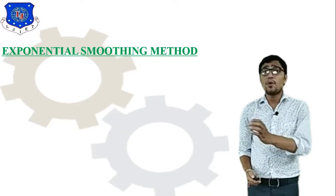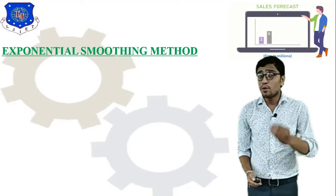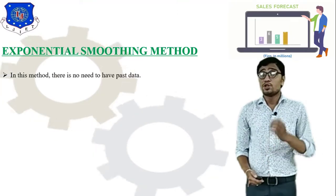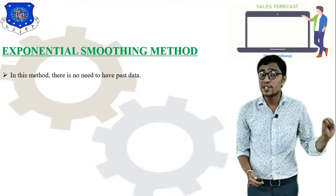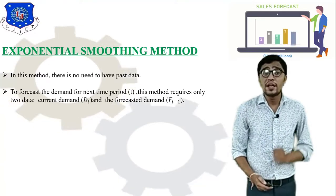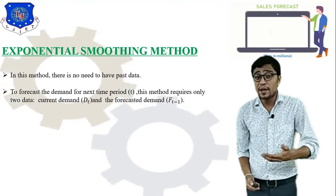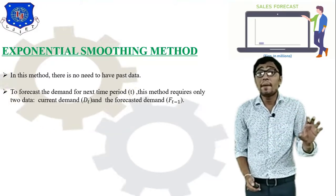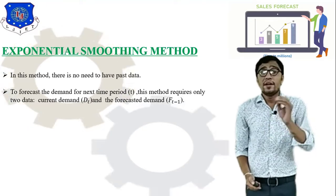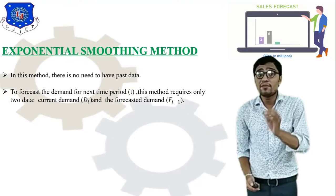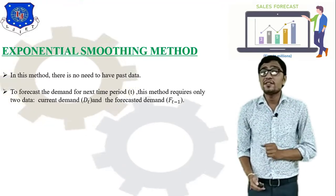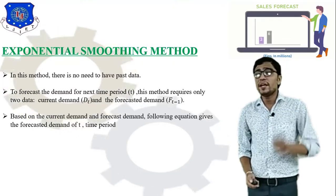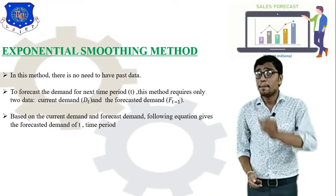So first of all, what do you understand by exponential smoothing method? Here I have attached one video related to sales forecasting. In this method, there is no need to have past or previous data. To forecast demand for the next time period or next month, this method requires only two data points: first, current demand; and second, forecasted demand.